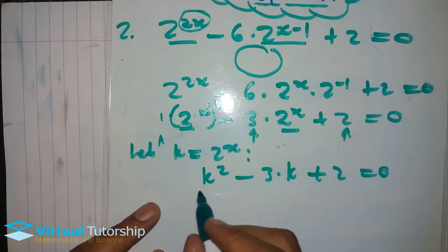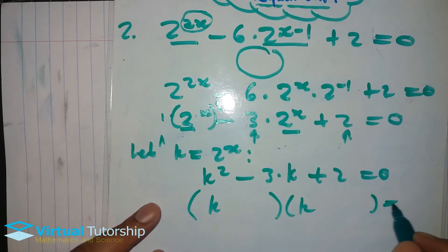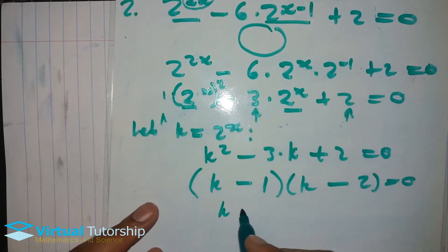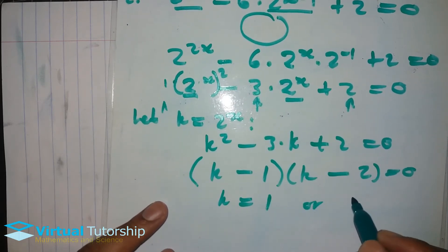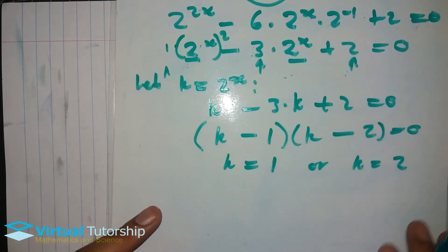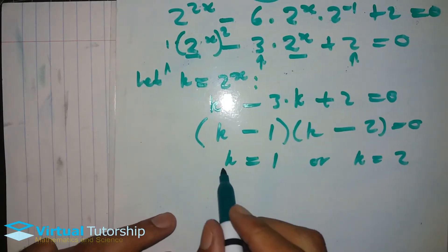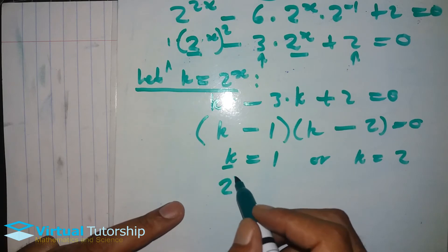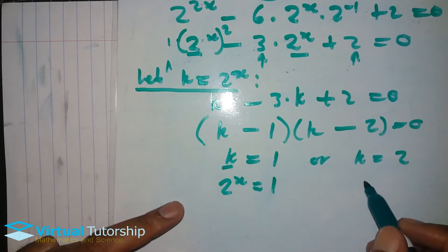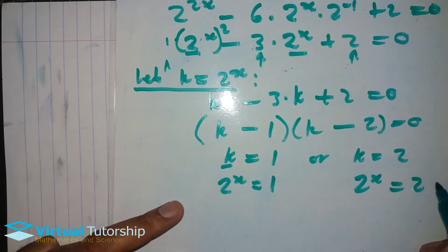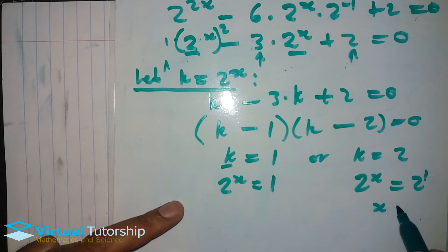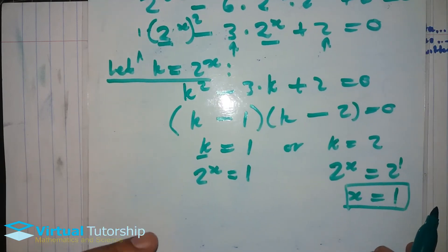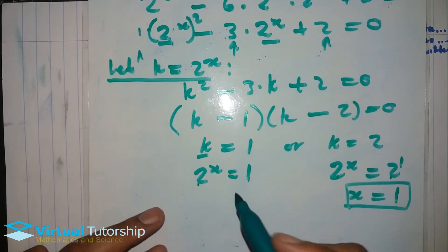So we have 2 exponent x substituted as k. Now using the factoring method for the quadratic equation: k is equal to 1 or k is equal to 2.